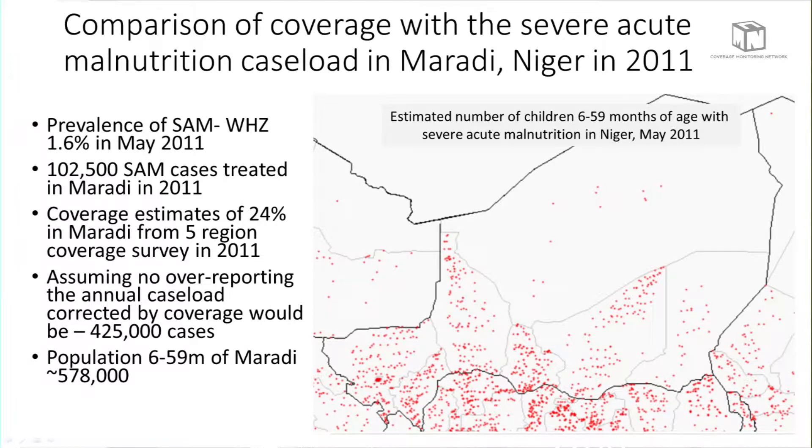The prevalence of severe acute malnutrition based on weight-for-height Z scores was 1.6 percent in May 2011. There were reported 102,000 new cases treated in Maradi in 2011. With a coverage estimate of 24 percent in Maradi from the five-region coverage survey, and assuming no overreporting error, the annual caseload corrected by the coverage estimate would be around 425,000 cases. But the population six to 59 months of Maradi is only 578,000 children.